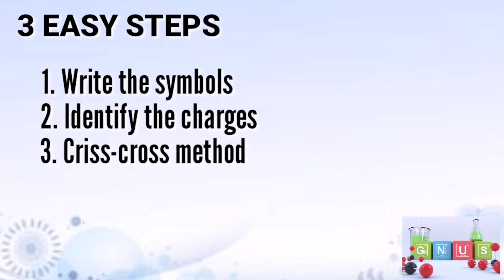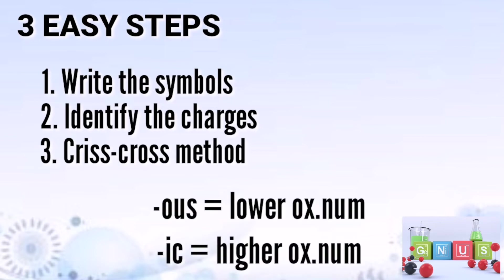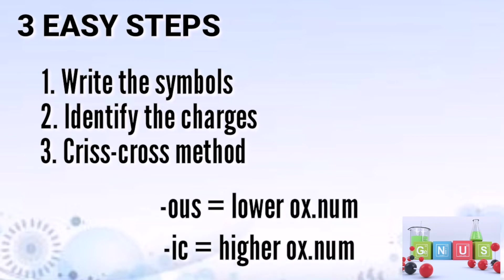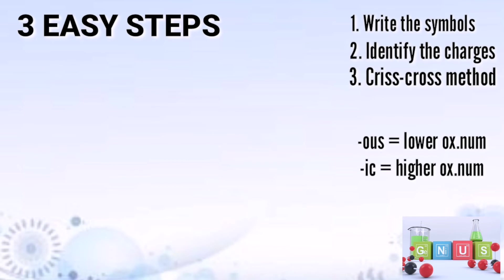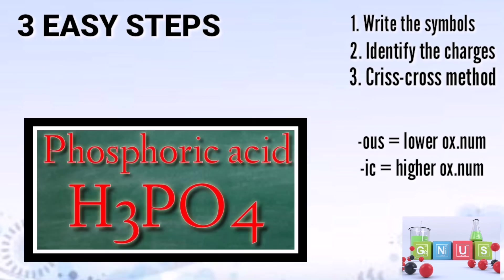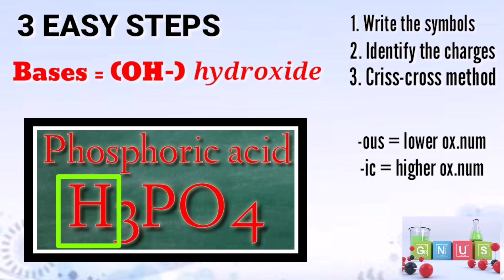In writing basic compound formulas, you should always remember the suffixes OUS and IC and how they are used in the compound in order to get the correct formula. In writing acidic compound formulas, hydrogen is written first. Here, in writing basic compound formulas, hydroxide is written at the last part of the compound. Hydrogen is for acid; hydroxide is for a basic compound.